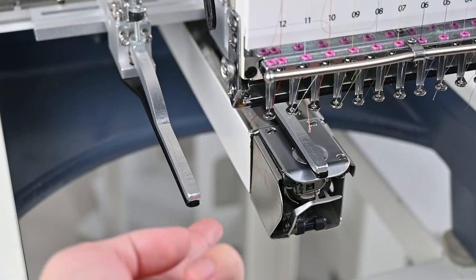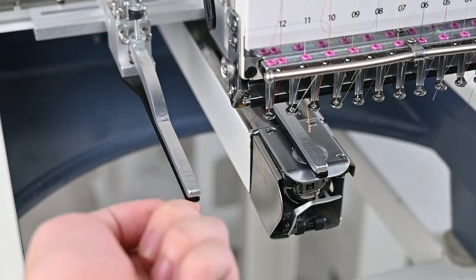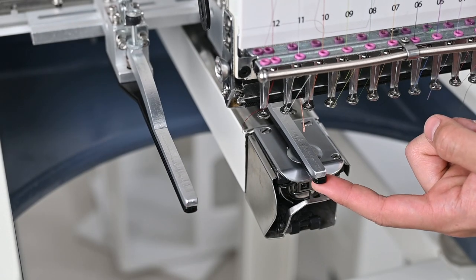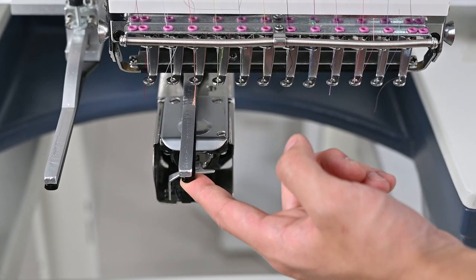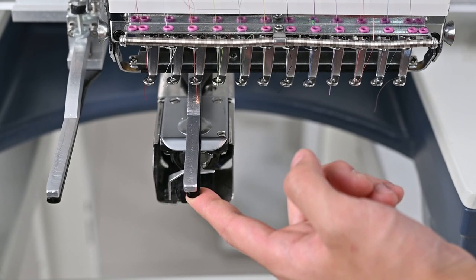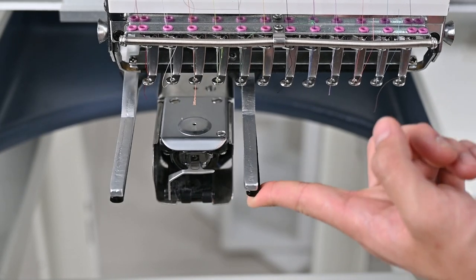Move the embroidery frame and move the shoes device to the center position. Pay attention to slightly lift the device when moving. Otherwise, it will hit the hook part.